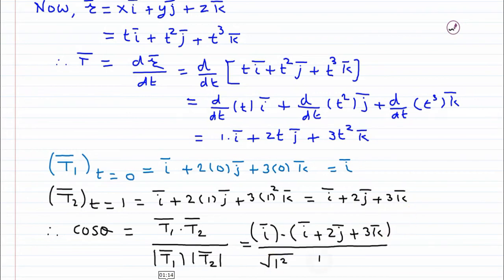Now magnitude of these particular terms. We are having here only one term that is i bar and its coefficient is 1. So it is under root of 1 square. Similarly for t2 bar, mod of t2 bar, we are having 1 square plus 2 square plus 3 square because coefficient of i is only 1. That is the magnitude of this vector, t2 bar.